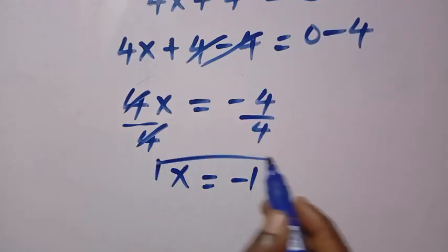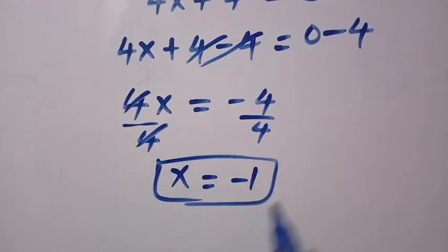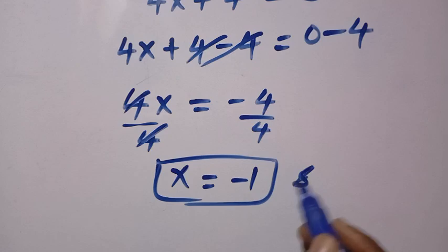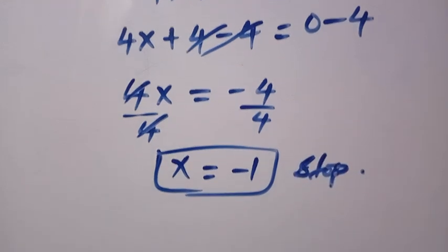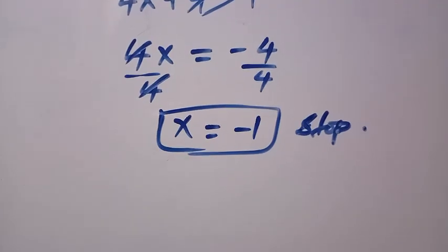To sum up, if we find the x equals to minus 1, we cannot just stop here. We can put a stop, no stop. We have to consider if this equals. And check. So, by checking, we have x plus 2 equals x.